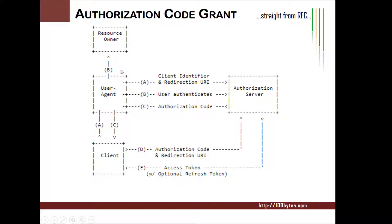The resource owner is a user and the user agent is usually a browser. Through the browser, the resource owner uses the authorization server. In the first request from the user agent, the client will contact the authorization server with a client identifier — that is the OAuth client ID — and the redirection URI.